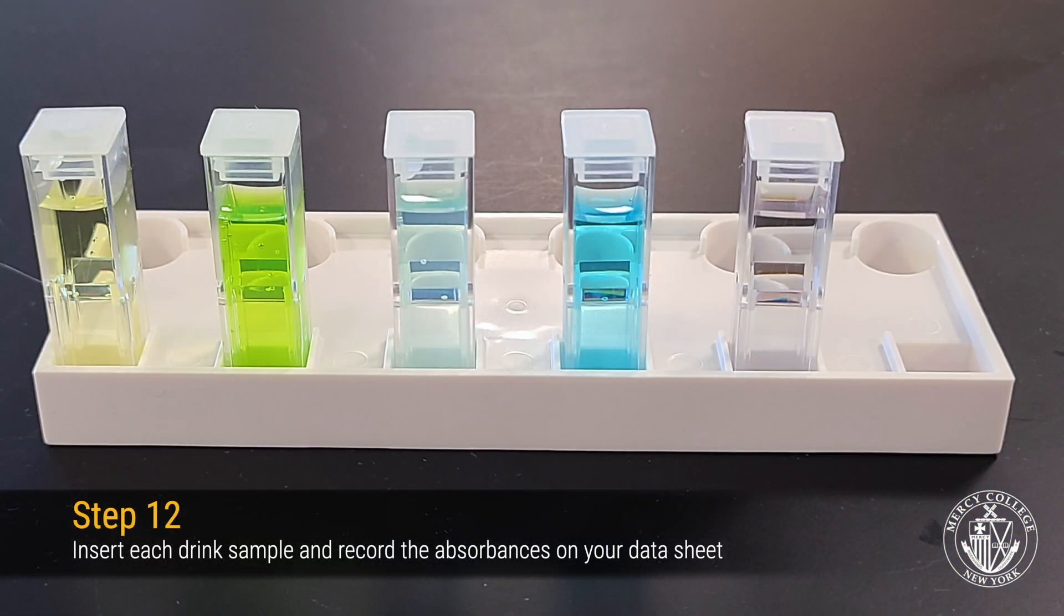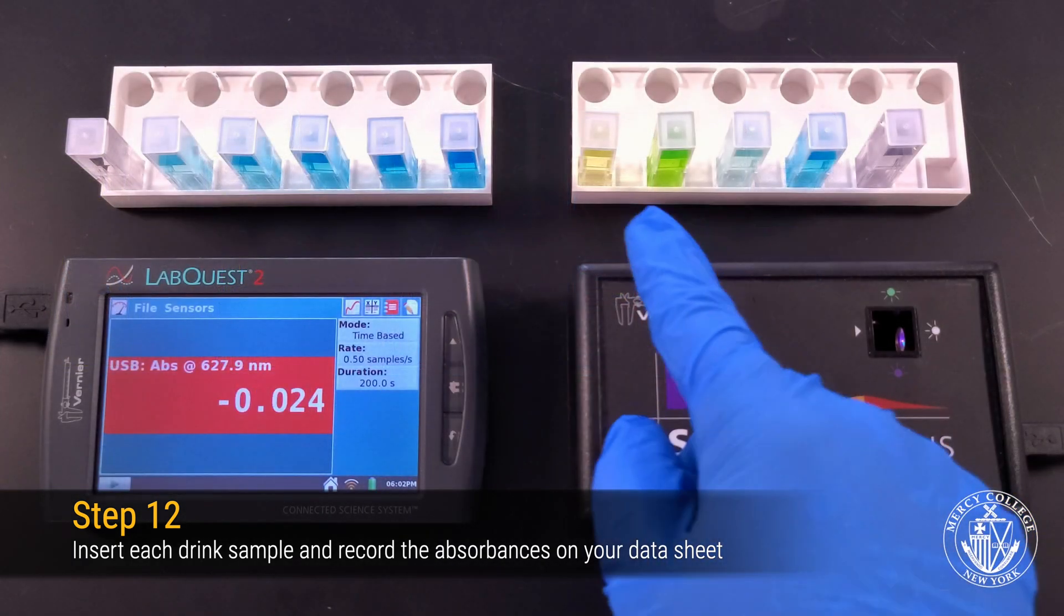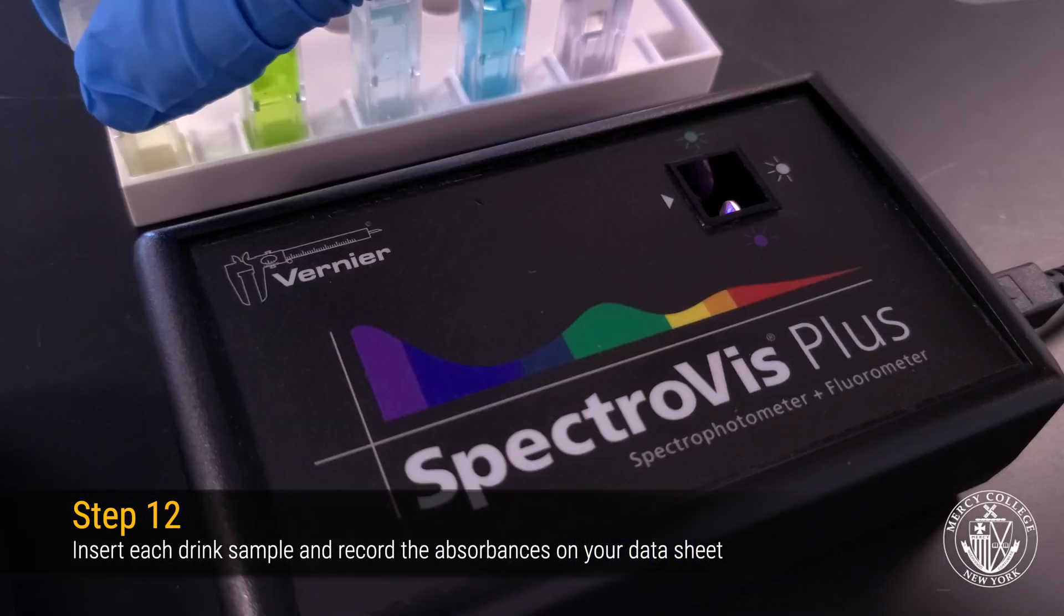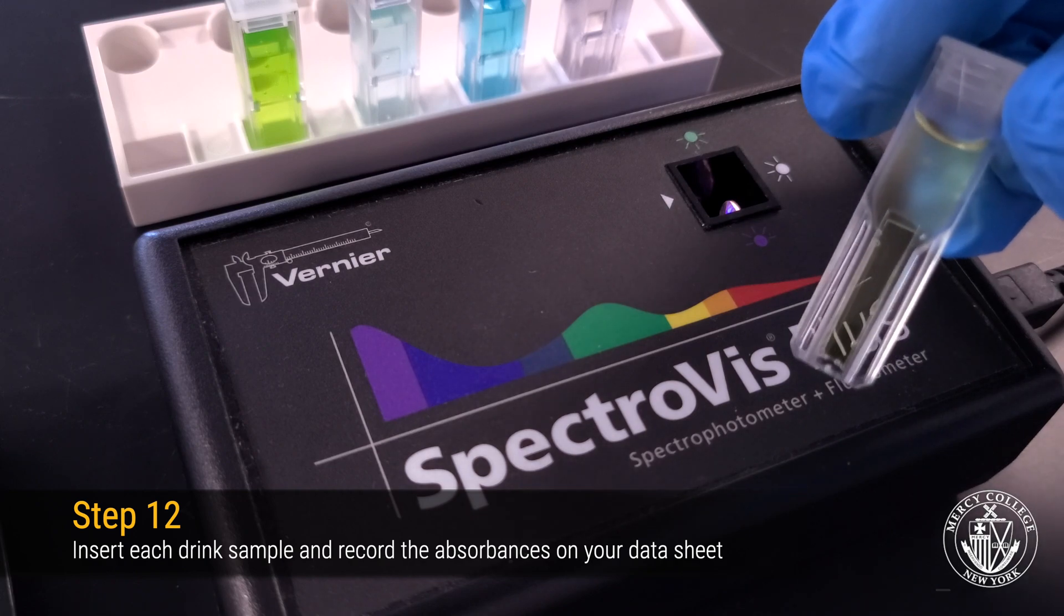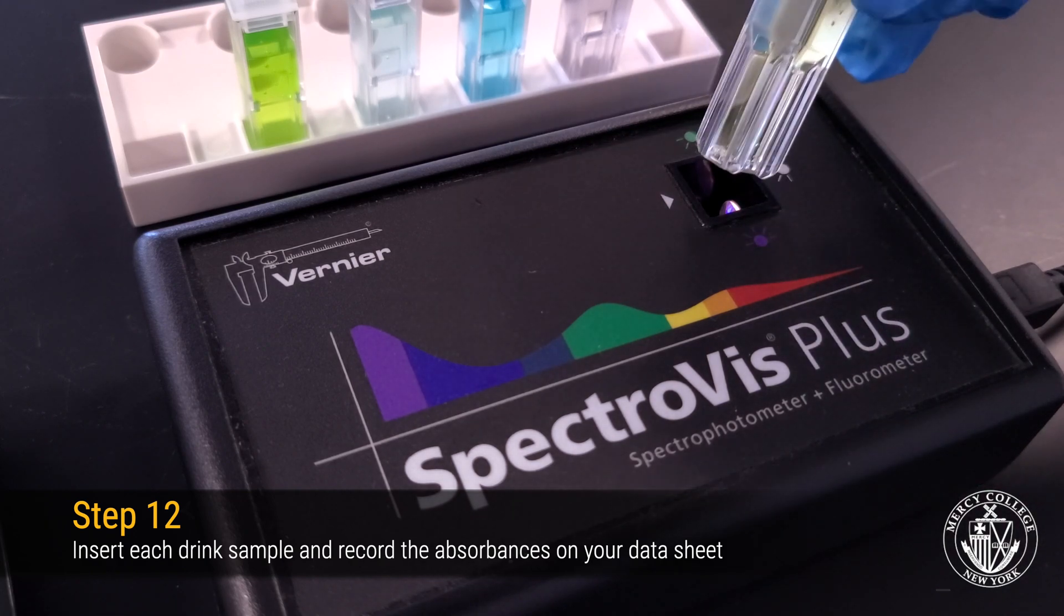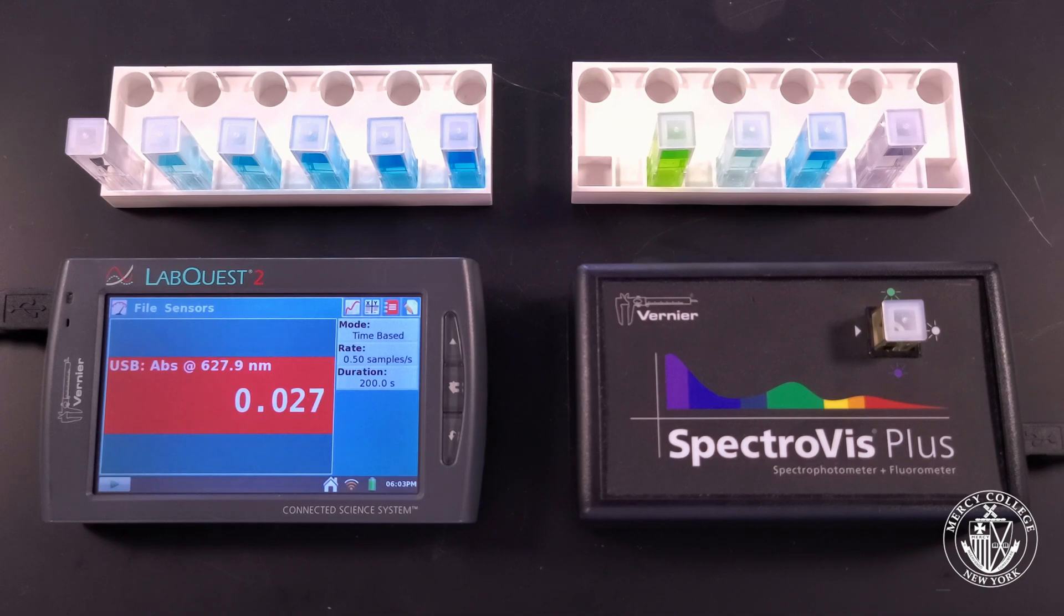We're now ready to analyze our sports drink samples. We'll again insert the sample cuvettes into the spectrophotometer one by one, making sure that the arrows on the cuvettes line up with the arrow on the spectrophotometer.